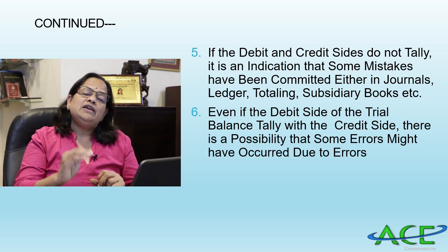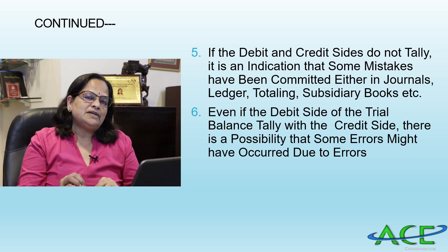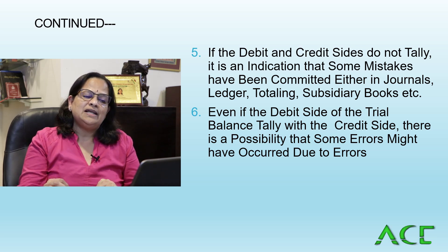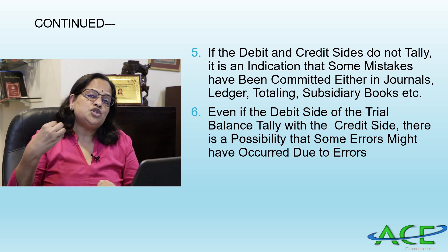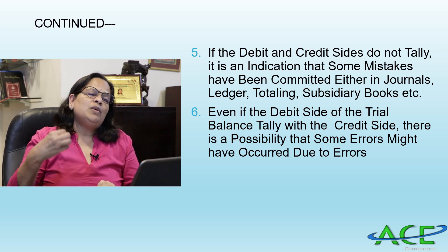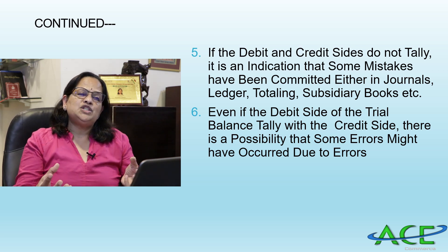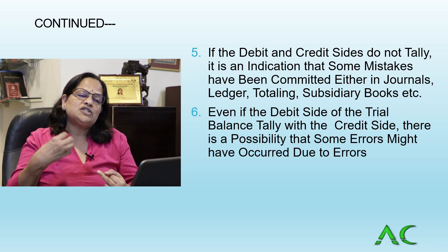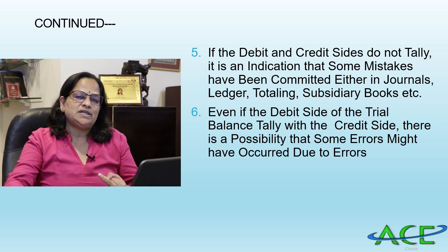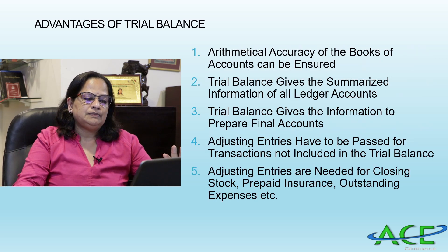Even if the trial balance agrees, in some cases there can still be errors. We have to learn about errors of principle, errors of clerical nature, and so on. For example, if a transaction is recorded twice, you have done everything correct in the double entry sense but the trial balance will still tally — yet one purchase or sales transaction has been entered twice. So even if the trial balance tallies, some errors can happen.